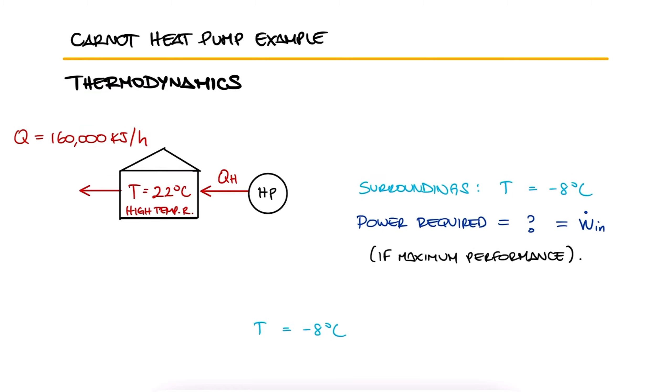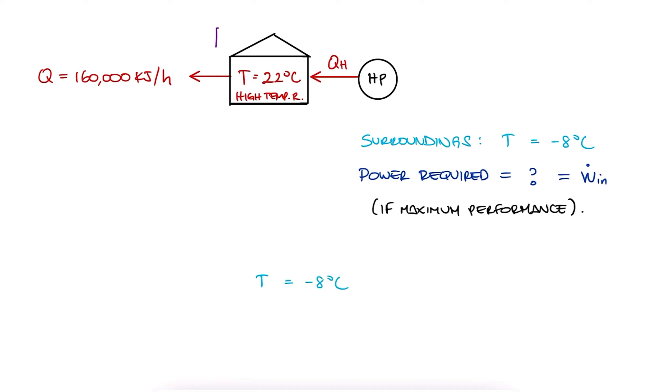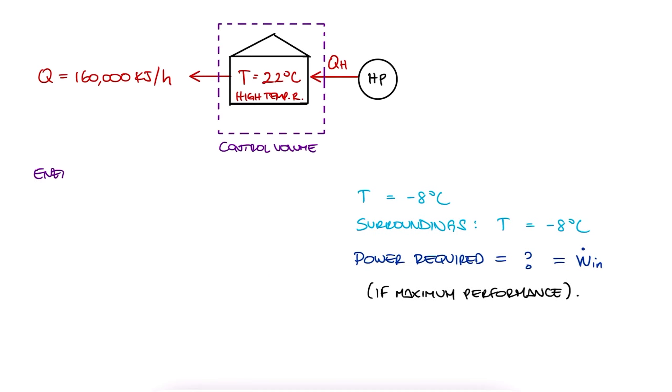The house itself is losing heat at the given rate. This means that if we draw a control volume around the house, and for the house to remain at a constant temperature, the heat that comes in from the heat pump into the house has to be equal to the heat rejected by the house.